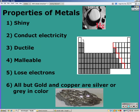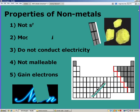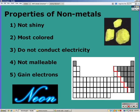Notice that hydrogen, although it's placed with the metals, is not a metal. The properties of non-metals are the opposite of metals: they're not shiny, most of them are colored, they do not conduct electricity, they're not malleable, and non-metals are going to gain electrons. Make sure you color those in — they're on the right of the stair step, as well as hydrogen.